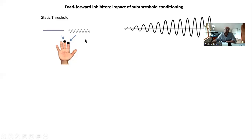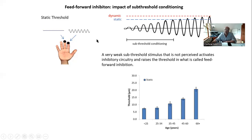As you track down to smaller and smaller values, this value of 20 will go down to some number between five and ten. If your skin sensitivity goes down, the static threshold actually goes up.